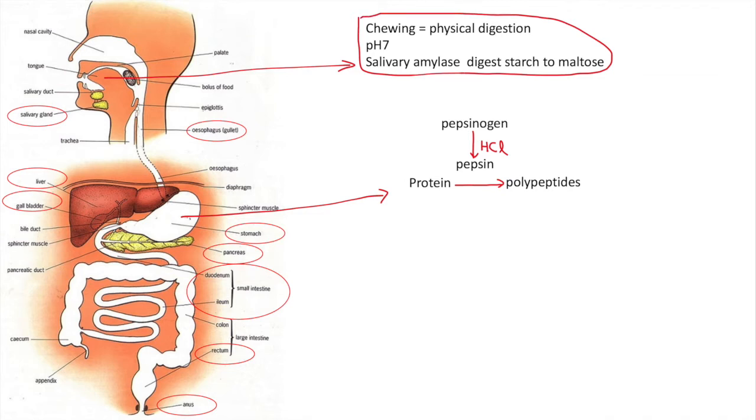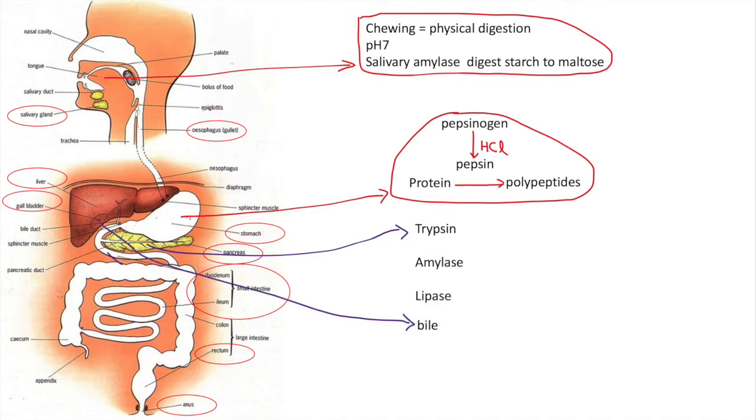Then it goes into the small intestine where a lot of things are happening. The pancreas, gallbladder, and small intestine all produce fluids. All three fluids are alkaline. They neutralize the acidic material from the stomach and produce an alkaline medium for these intestinal enzymes to work.